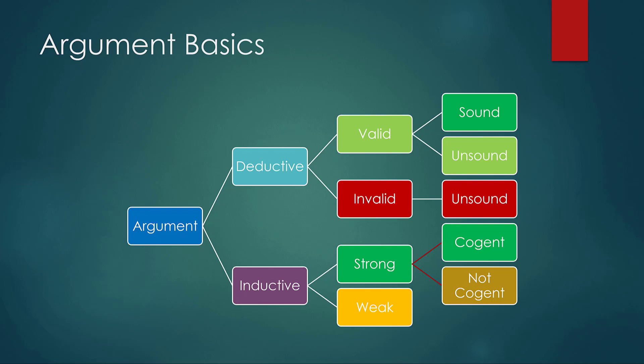If you have an argument where the premises make it very likely the conclusion would be true, it would be strong — and if the premises are actually all true, some would call this cogent. If the premises don't provide enough support — and this can depend on the context — it'd be called a weak argument. If it's weak, it's automatically not cogent. But an argument could be strong and not cogent because it could have good strong logic but implausible or untrue premises.